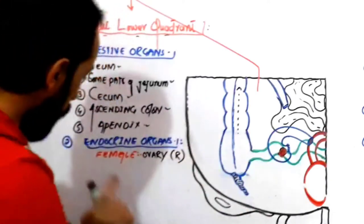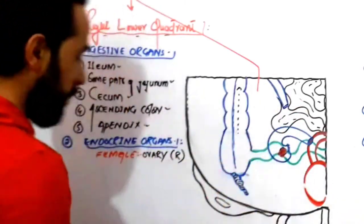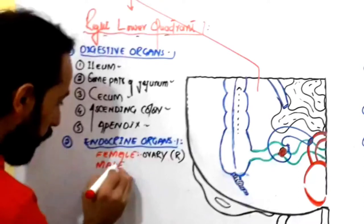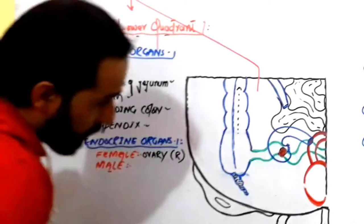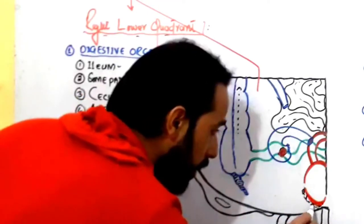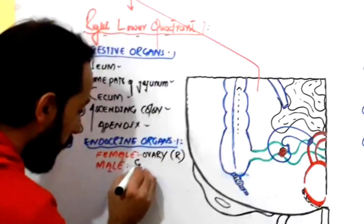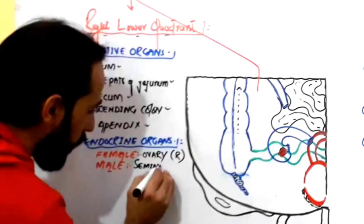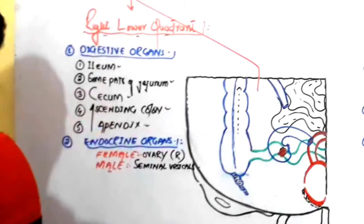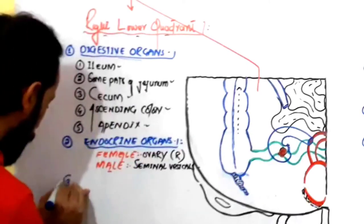So in the case of females, there are endocrine and reproductive organs in the right lower quadrant. In the case of males, if you talk about the seminal vesicles — which are present posterior to the urinary bladder — they release certain hormones. So the seminal vesicles are the endocrine organs found in the male's right lower quadrant.